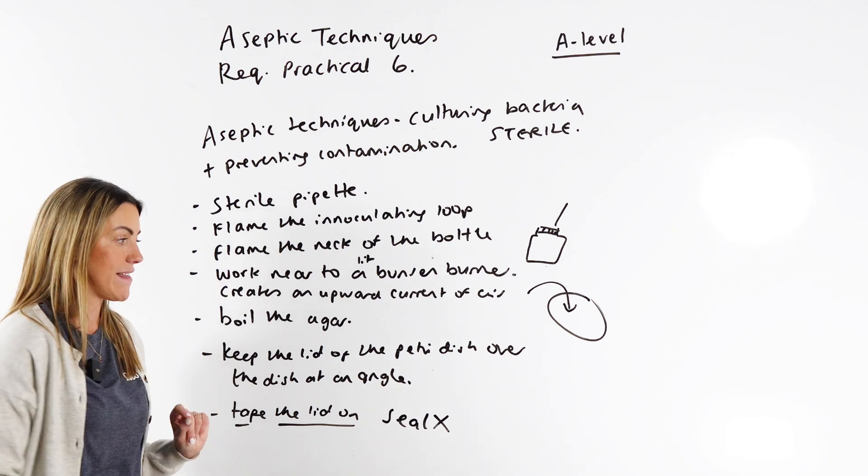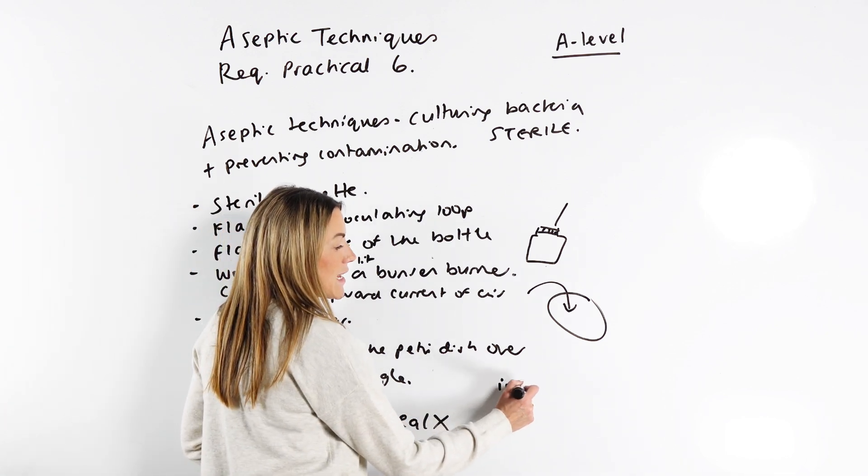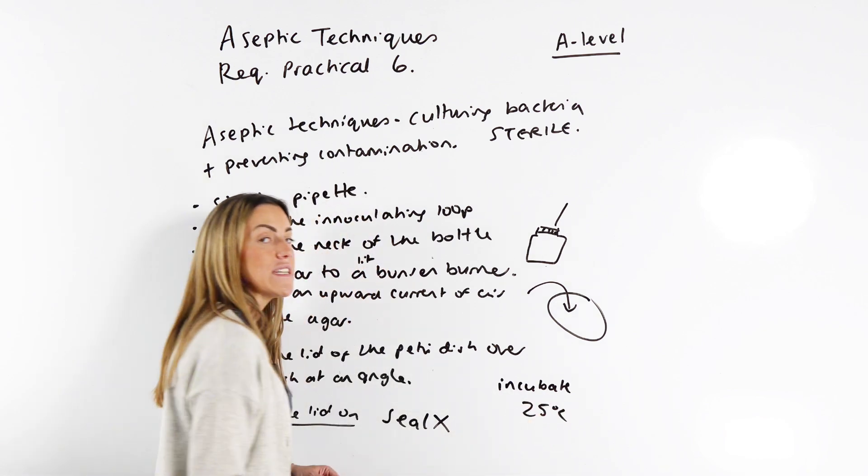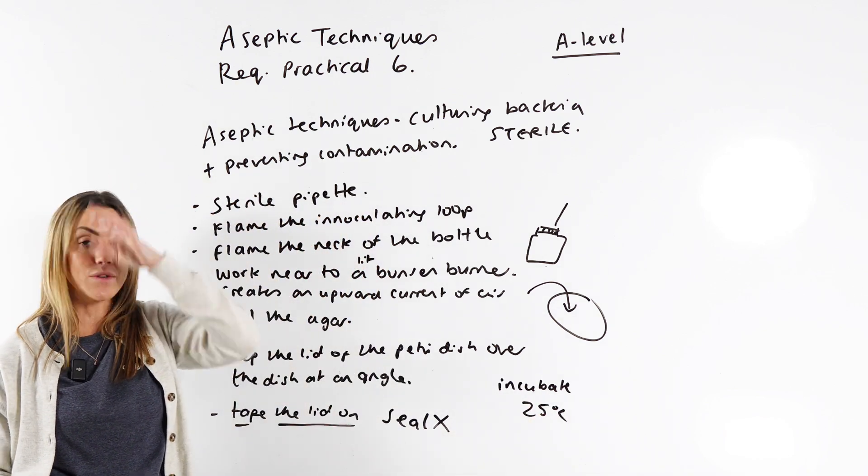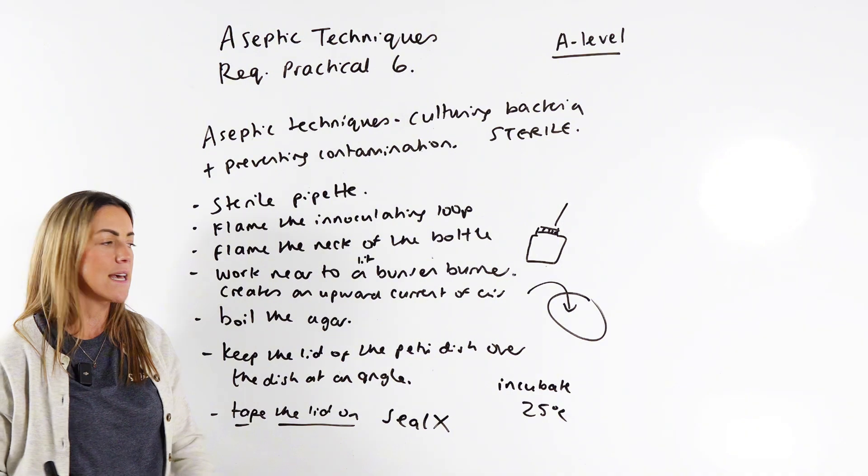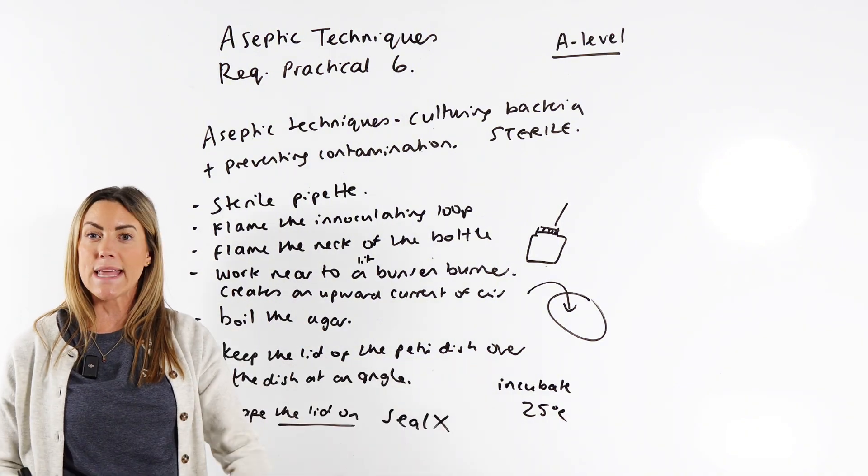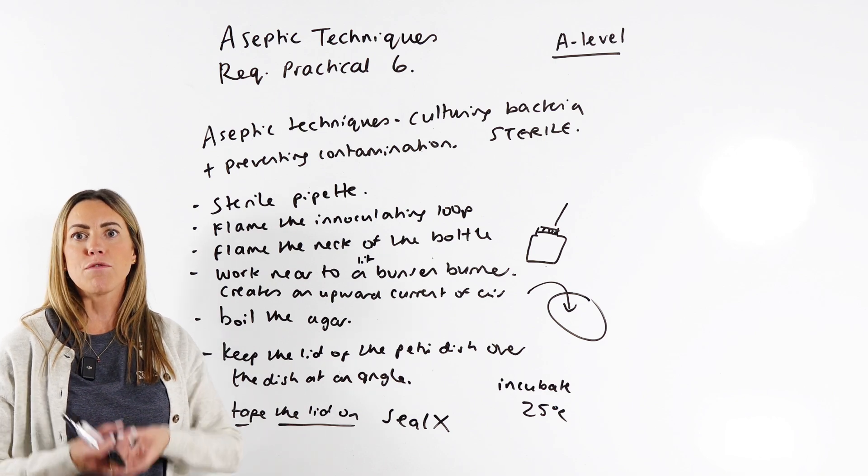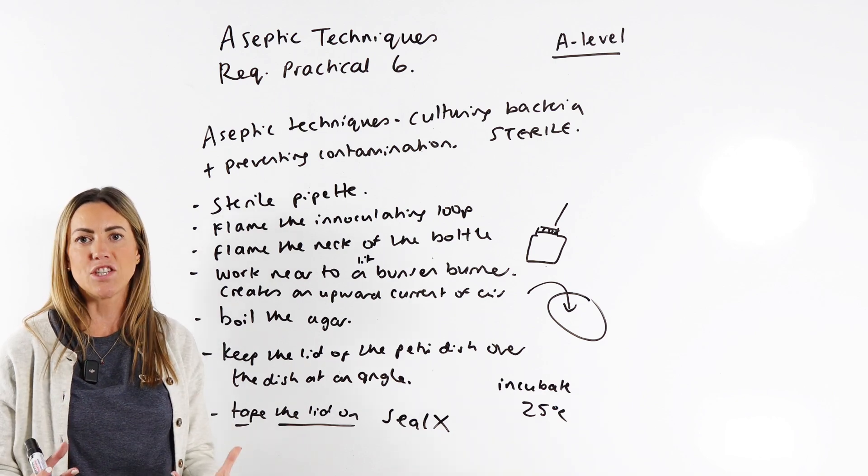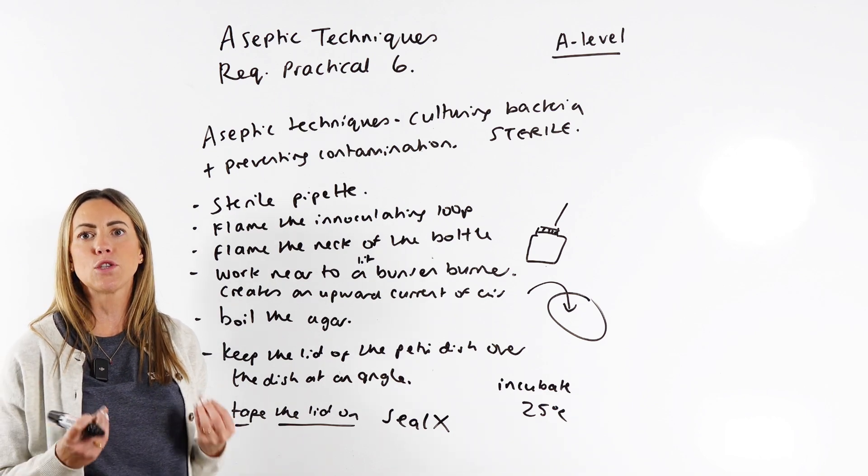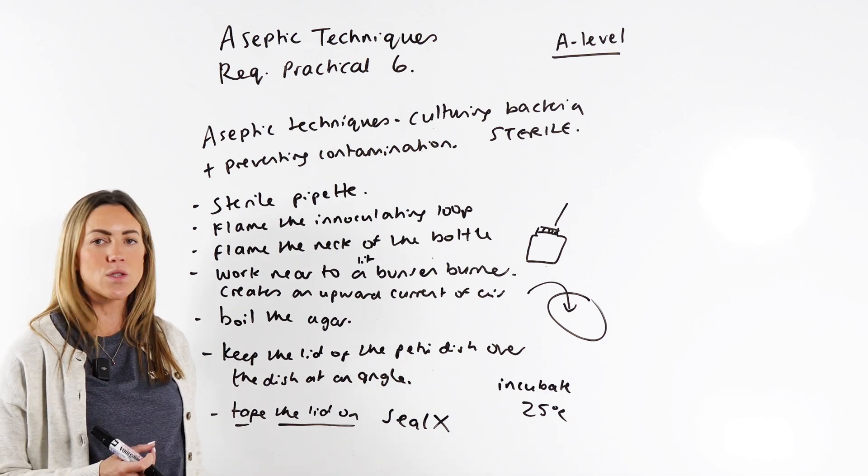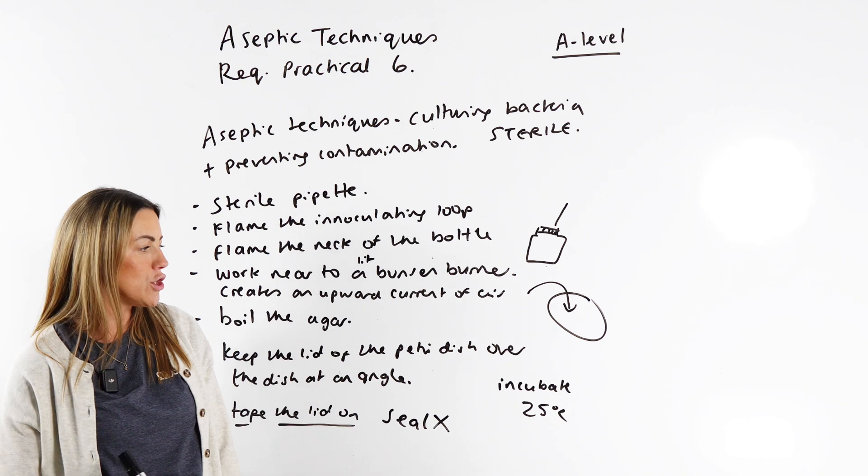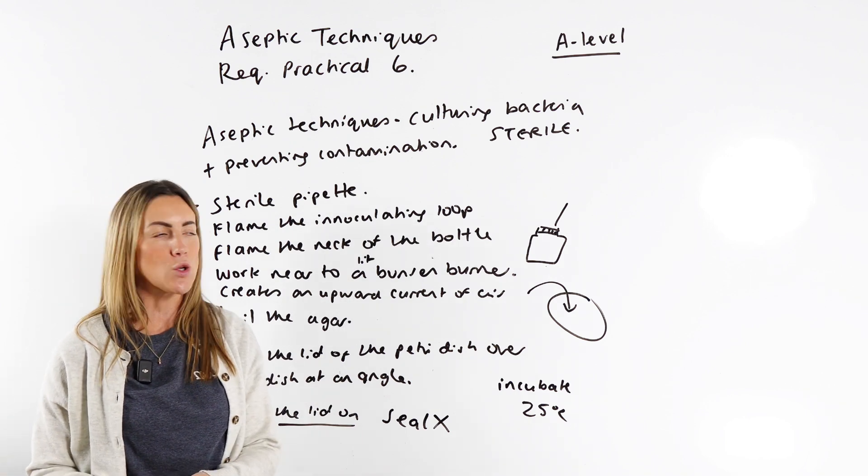You're going to incubate it then. You're going to incubate. And in a school or college, 25 degrees Celsius is the highest temperature you can use for health and safety reasons. If you use 37 degrees, like they may do in industry, that could potentially encourage the growth of harmful pathogens, pathogens that are harmful to humans. So in a school environment, 25 degrees is the warmest temperature you can use to incubate your plate.